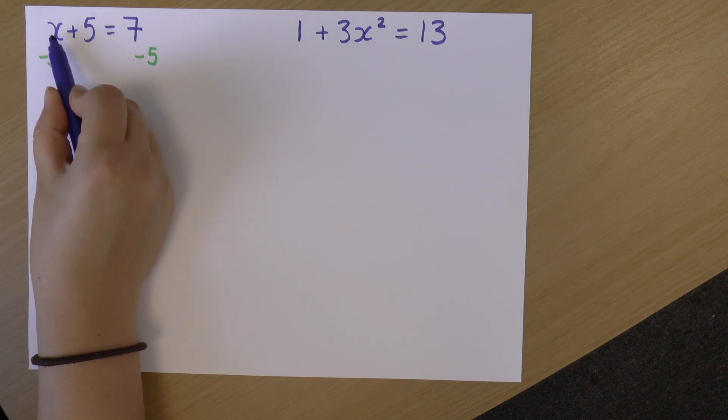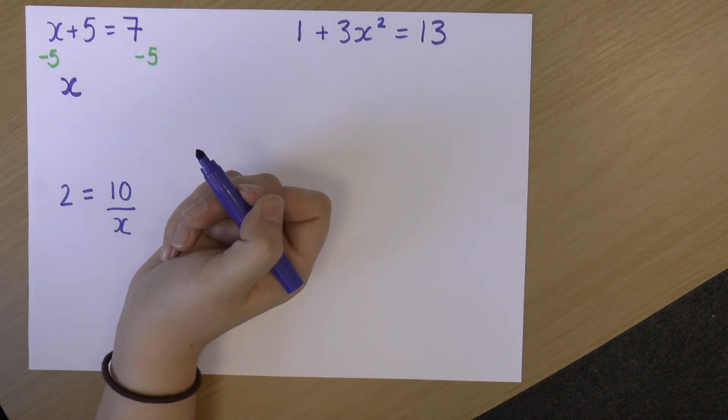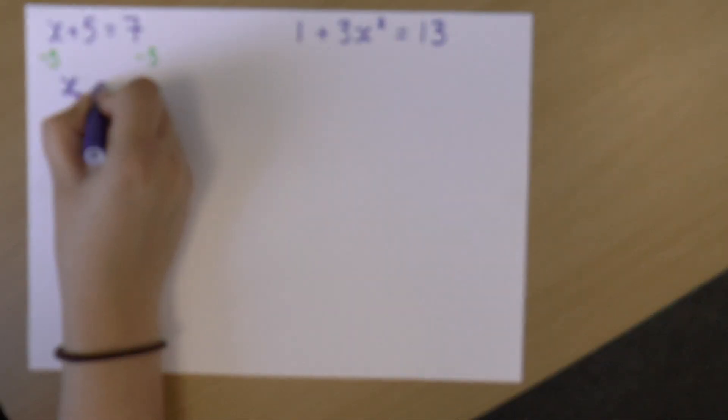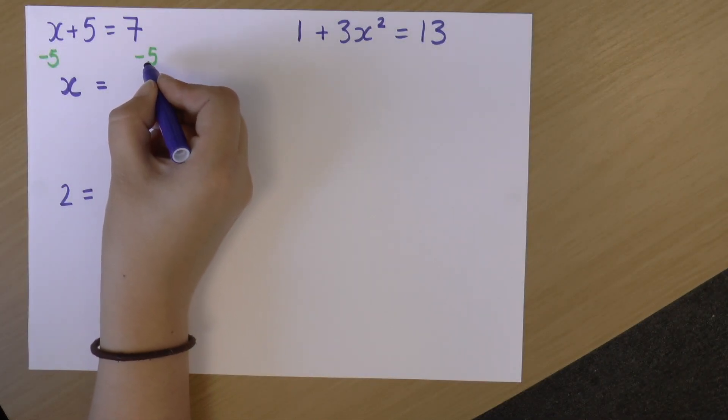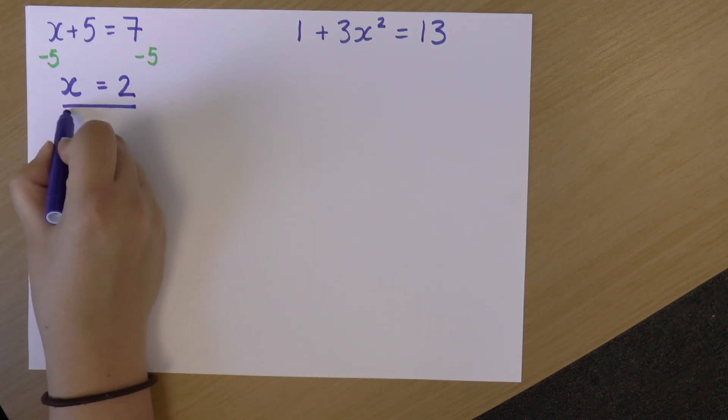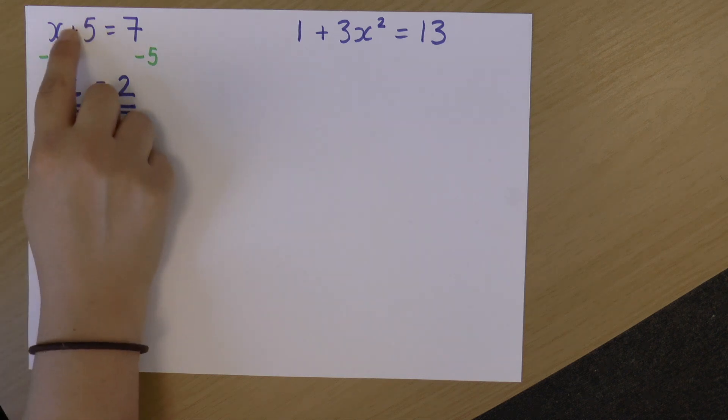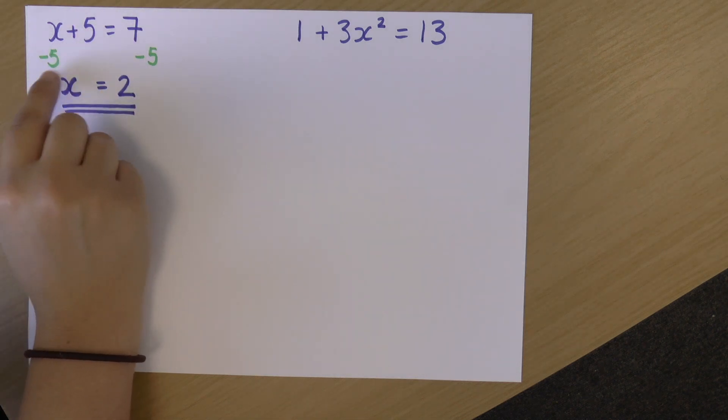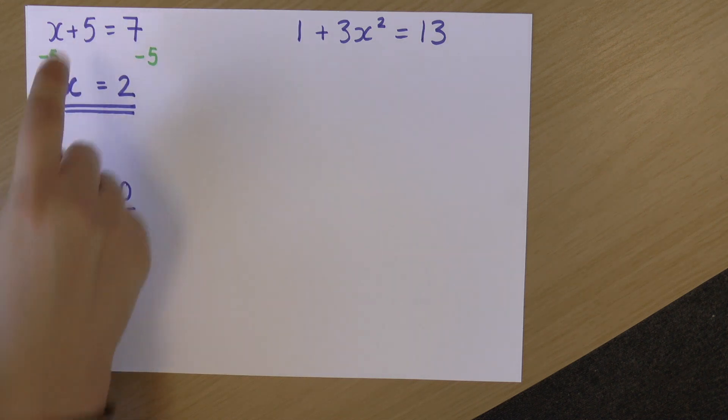So let's have a look at what that gives us. So now I've got x plus 5 and I've taken away 5, which leaves me just with x. And then on the right, that gives me 7 minus 5. Now I know that 7 minus 5 is 2. And so I can find that x equals 2. So I'm doing the opposite of whatever is in the equation to get rid of these terms. I've gotten rid of that 5 by taking away 5 because it's a plus 5 there.